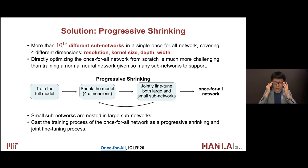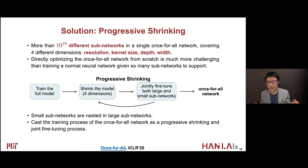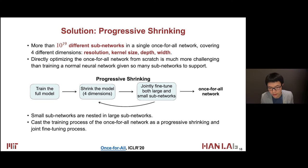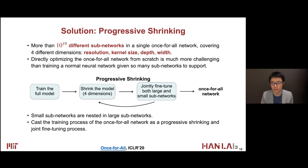This is the high-level overview of progressive shrinking. We first train the full model, then shrink the model across four dimensions: resolution, kernel size, depth, and width. After that, we jointly fine-tune both the large and small subnetworks — the whole broad spectrum. We repeat this process until we get a good once-for-all network. For those familiar with model pruning, it's roughly similar — we shrink and prune — but that's only in the channel dimension, whereas here we shrink across four dimensions. Smaller subnetworks are nested in the large subnetworks, so their weights are shared. You train one model that can contain many models.